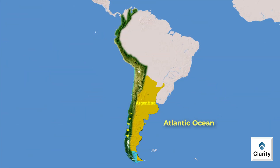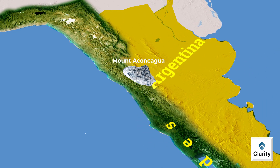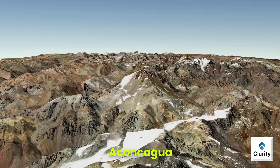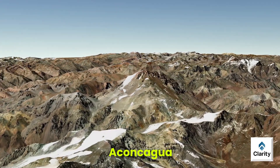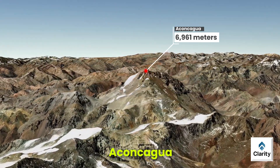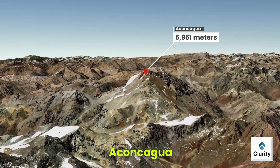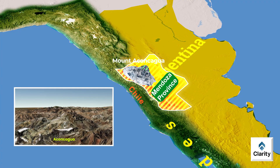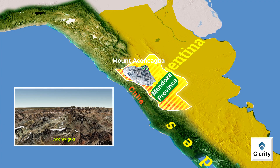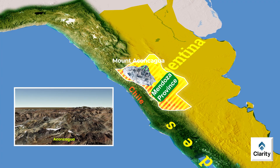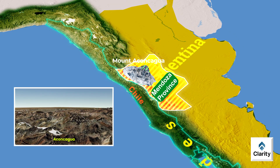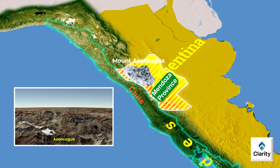Next we move further north in South America, where we find Mount Aconcagua. It is the highest mountain in South America and also the highest peak outside Asia. Aconcagua rises 6,961 meters above sea level. Mount Aconcagua lies entirely in Argentina, in Mendoza province. Its exact location is near Argentina's western border with Chile. Aconcagua is part of the Andes mountain range.